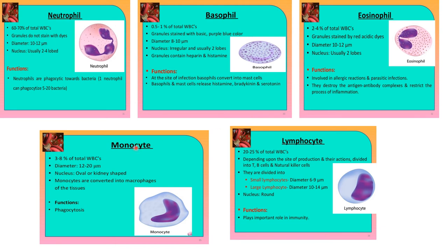Monocytes are a type of agranulocyte, meaning they do not contain granules. There are 3 to 8% of total WBCs. The diameter is 12 to 20 nanometers. The nucleus is oval or kidney-shaped. Monocytes are converted into macrophages in the tissues. Their function is phagocytosis — engulfing bacteria.